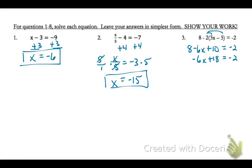Now what's happening to my variable is 18 is being added, and then negative 6 is multiplying. So I'll start by undoing the operation that's furthest away. So I'll subtract that 18. Bring down my negative 6x equals negative 20.